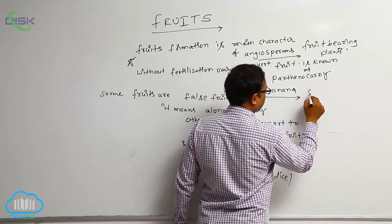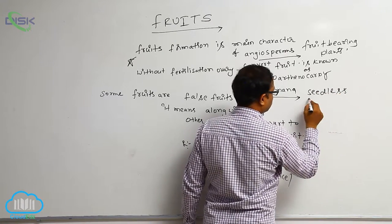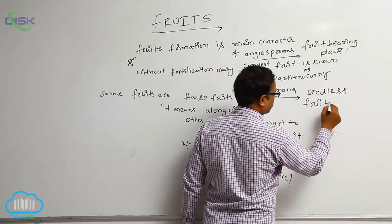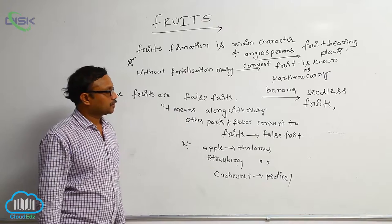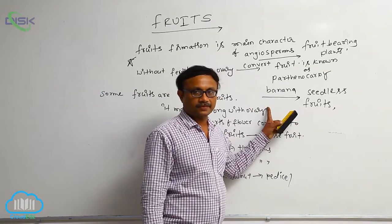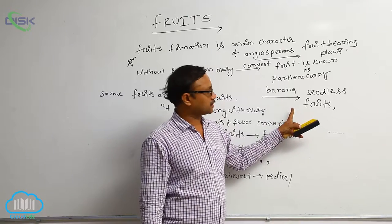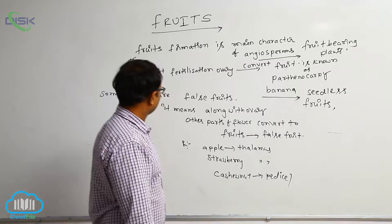By parthenocarpy, seedless fruits are formed. By the application of some phytohormones, artificially, seedless fruits are produced, for example in grapes. But naturally, banana is a seedless fruit.